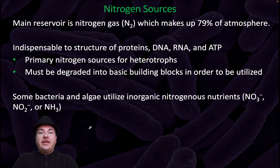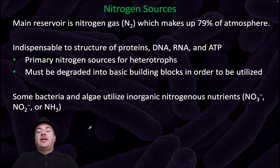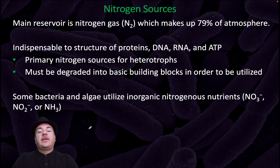Where do organisms get their nitrogen? The main reservoir is nitrogen gas, N₂, which makes up 79% of the atmosphere. Nitrogen is indispensable to the structure of proteins, DNA, RNA, and ATP, and these are the primary nitrogen sources for heterotrophs. They must be degraded into basic building blocks in order to be utilized. For example, a heterotroph will ingest a protein and break it down to amino acids to get the nitrogen.